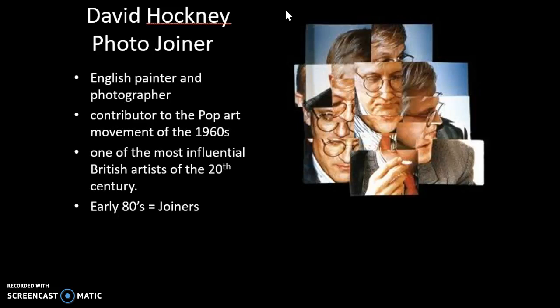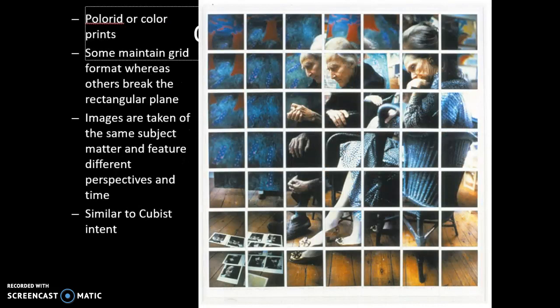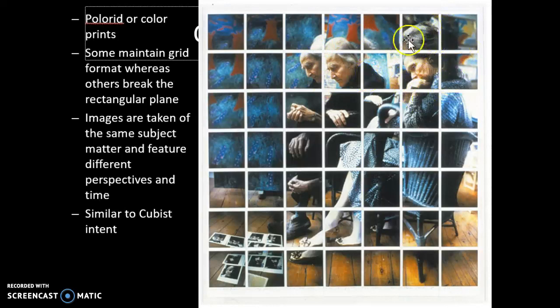But in the early 80s, he really started exploring a technique called joiners, which you can see an example of right here. For this project, you guys are going to be picking either yourself or somebody else to create a joiner — you're going to be emulating David Hockney's style. Originally, some of his images were of Polaroids, so you can see individual squares comprised the composition, but there is also a little bit of a surreal element in that things don't exactly match up in scale or shape. There's a little bit of distortion that he plays around with.